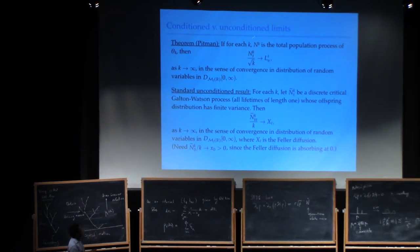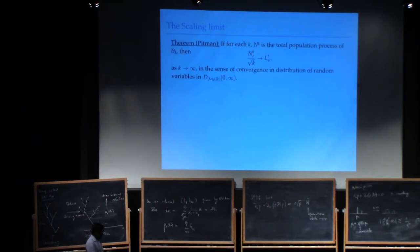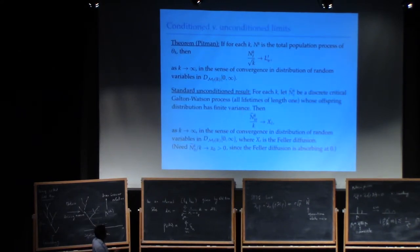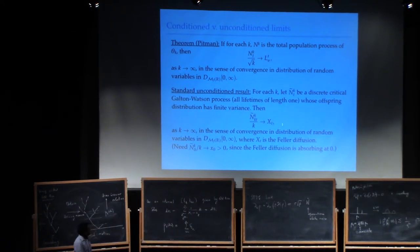There are different scalings depending on whether you're conditioning or not conditioning. There's a result of Pittman which says the total population process converges to the local time in the case of conditioned critical binary Galton-Watson trees. In the other case, if you take a discrete critical Galton-Watson process with finite variance offspring, then — this is standard, textbook — the Galton-Watson process converges to the Feller diffusion. There's an SPDE in this setting too.